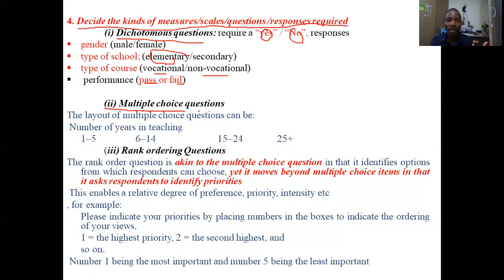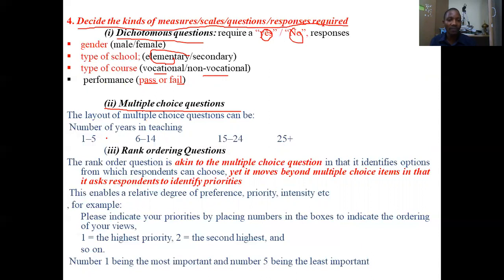Another type is multiple choice questions, where the respondent selects only one among given alternatives that is most relevant according to their observation and understanding. For instance, a question about number of years in teaching might offer ranges: one to five, six to fourteen, fifteen to twenty-four, twenty-five and above — and the respondent simply selects one.